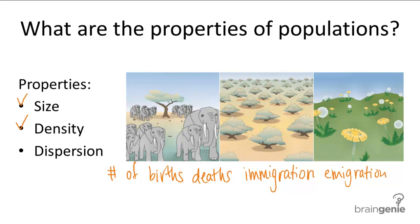Scientists can't go around counting all the individuals in a population to get exact numbers for population size and density, so they use different estimation techniques. For example, scientists will use the method of mark and recapture. In this technique, they capture different organisms — say an elephant — tag it, and let it back into the environment. After a few years, the scientists come back and collect more elephants, counting how many of the tagged elephants are recaptured the second time around. Based on these numbers, they use a mathematical formula to determine approximate population size and density.